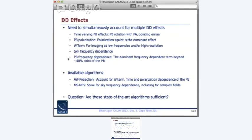So you need to account for these. And you need to account for the frequency dependence because that is the dominant effect roughly beyond the 50%, 40% point of the primary beam. So the algorithms available before we started thinking about all this - what are the state-of-the-art algorithms that we have? And are they sufficient?